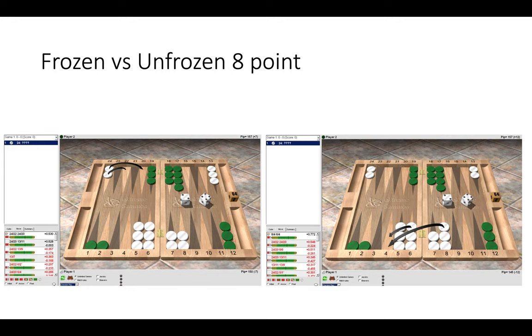In the position on the right, because white's point isn't frozen, it's better to make the 4-2 to extend the prime. So there, it's clearly the right move on the right to make the 4-point, whereas on the left, making the 4-point is a mistake. Here you can see the value of freezing the points.